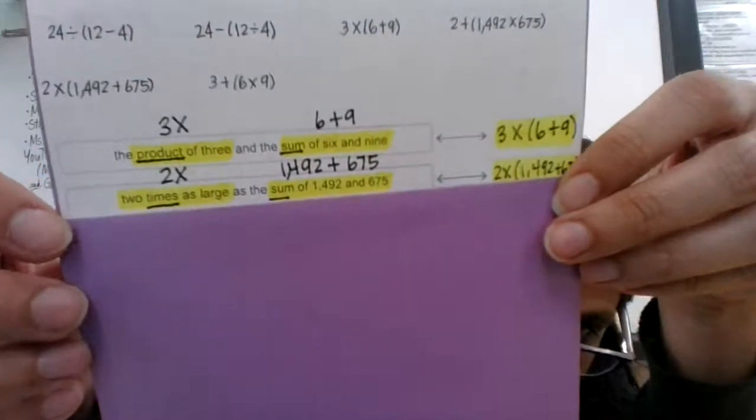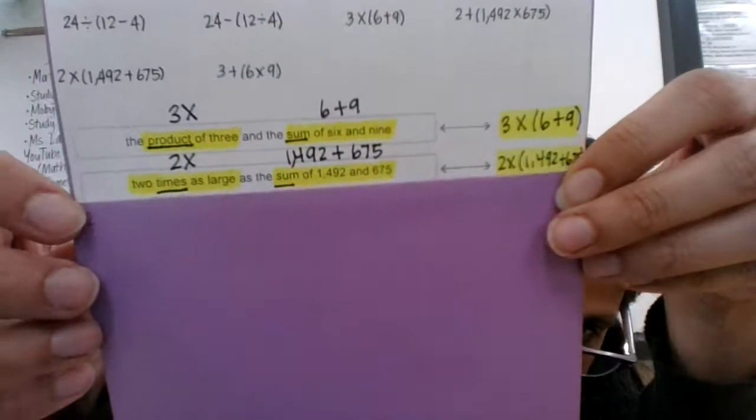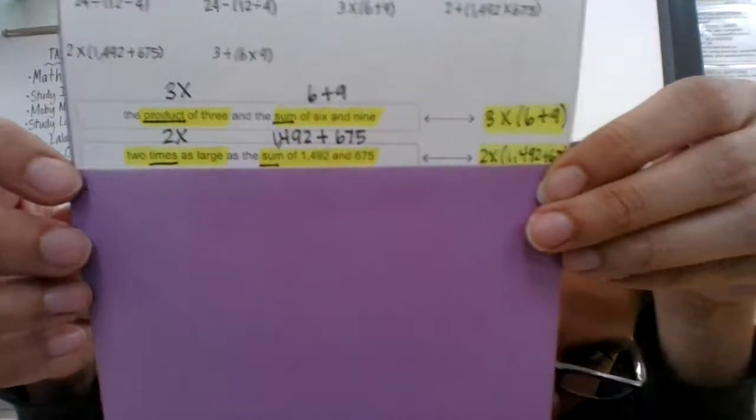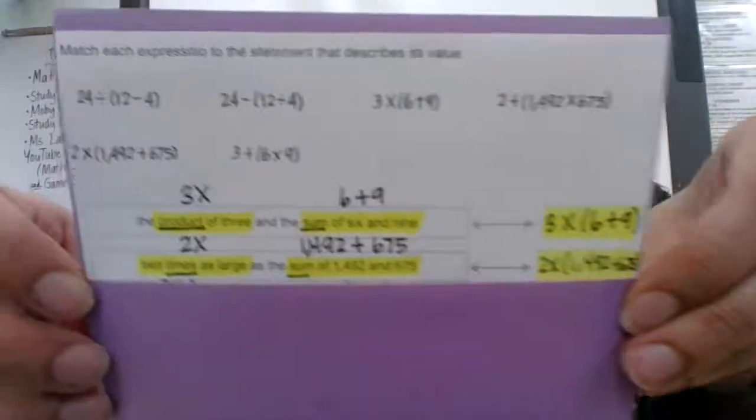Two times as large means 2 times, and the sum of means to add 1,492 and 675, and then I found the matching expression.